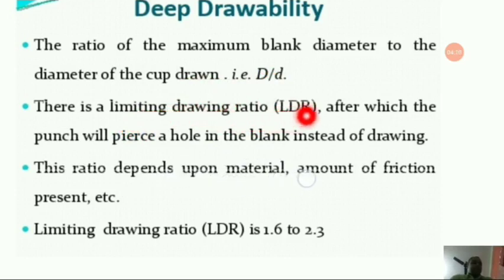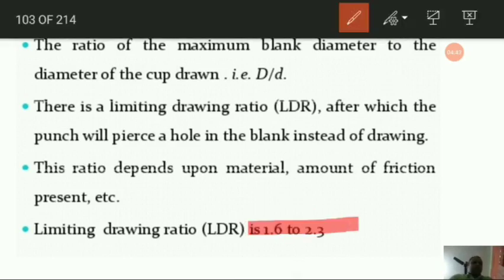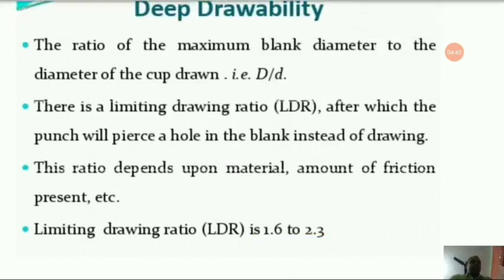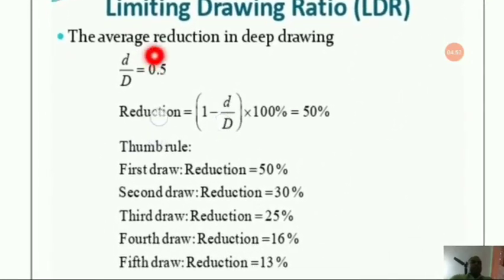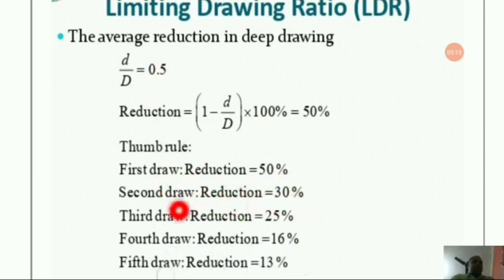The limiting drawing ratio (LDR) is restricted to 1.6 to 2.3 — this is very important. The average reduction in deep drawing keeps d/D at 0.5, giving a 50% reduction. In successive draws: first draw gives 50% reduction, second draw 30%, third draw 25%, fourth draw 16%, and fifth draw 13%.